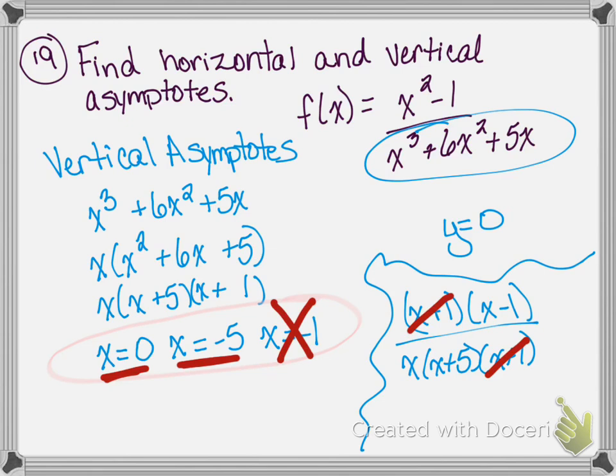So your only vertical asymptotes are x equals 0 and x equals negative 5. At x equals negative 1 you'd have a hole — an open circle — in the graph. We didn't talk a ton about that this semester, but I wanted to mention it because your answer key addresses it. The parts on your final exam don't involve much graphing of rational functions since you did so much of that on your project.